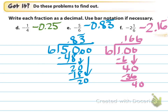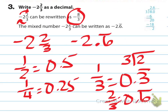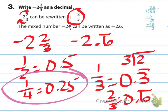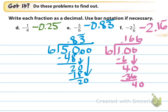For d: just like one-fourth is 0.25 — one quarter equals 25 cents — hopefully you knew it was negative 0.25 without much math. For e: I did top dog in the doghouse with 5 inside the division and solved it out to be −0.83̄ repeating — don't forget that negative sign. For f: I went straight to the whole number 2 and then did one-sixth separately. If you did top dog in the doghouse with 13 divided by 6 you would get the same answer: −2.1̄6̄ with the 6 repeating.